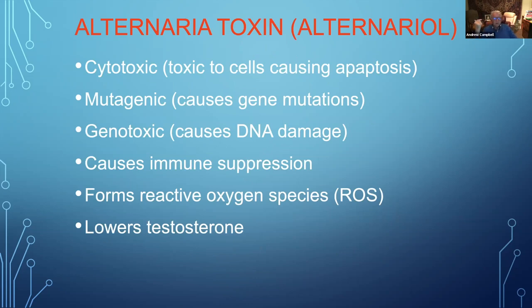Alternariol, the toxin from the mold Alternaria, is toxic to cells and causes gene mutations — it's mutagenic. It causes DNA damage leading to cancer — genotoxic. It suppresses the immune system, forms reactive oxygen species causing inflammation, and lowers testosterone. I've seen young men age 35 being treated for testosterone deficiency with gels or shots and it doesn't work, because the cause isn't being addressed. Remember: identify the cause, remove the cause, repair the damage — don't treat the symptoms.